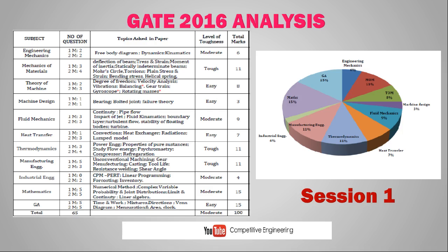Going directly to the GATE 2016 Session 1 analysis — on the left side the subjects are listed, the second column indicates number of questions, and then topics asked and level of toughness and total marks. The total marks is 100 and the difficulty level was moderate. The highest marks come from manufacturing engineering at 11 marks, thermodynamics at 11 marks, and fluid mechanics at 9 marks, theory of machines at 8 marks.